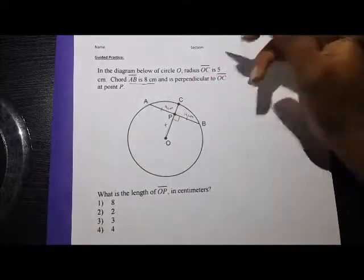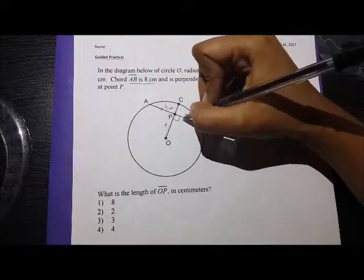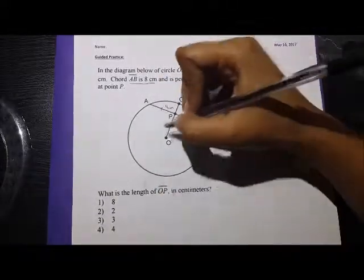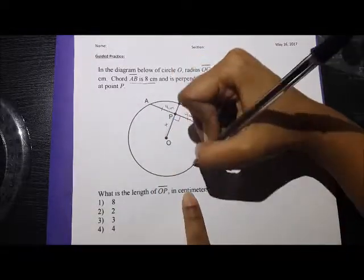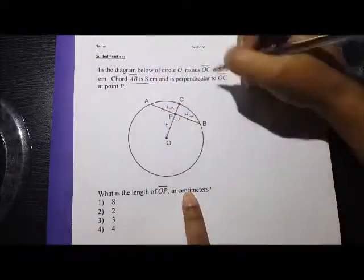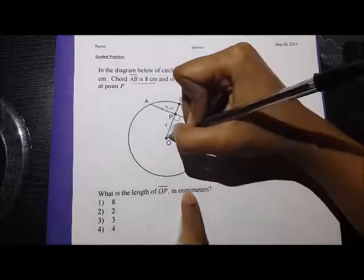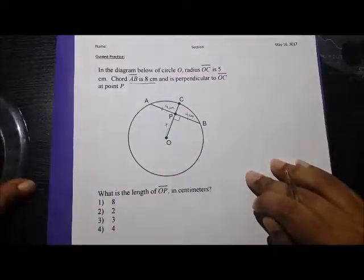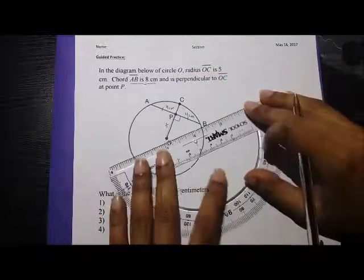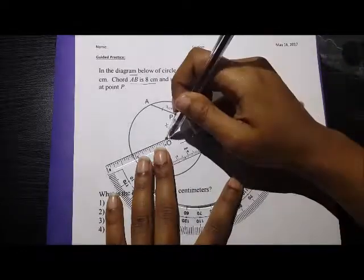So here I have a right angle, and I know that if I draw a radius anywhere, it's always going to be the same length, in this case 5 centimeters. So I can actually draw a right triangle from O to B.